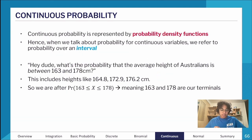We generally represent continuous probability by what's known as a probability density function or PDF. When we talk about continuous variables, we refer to them over an interval rather than a particular case.